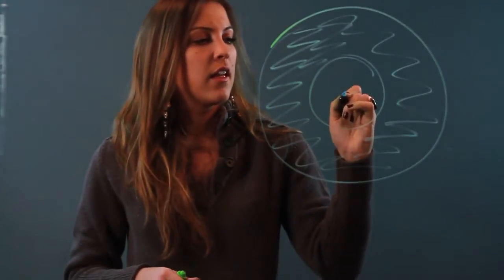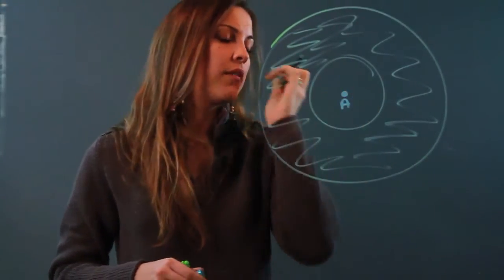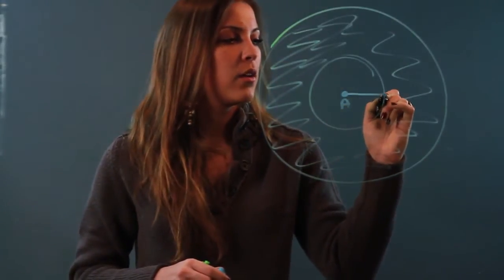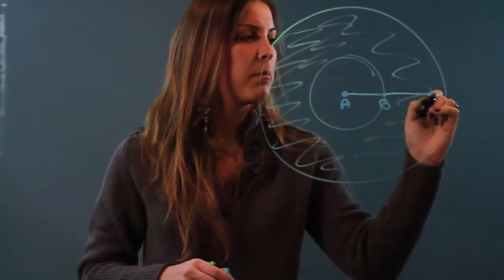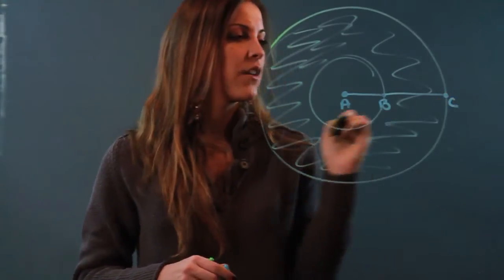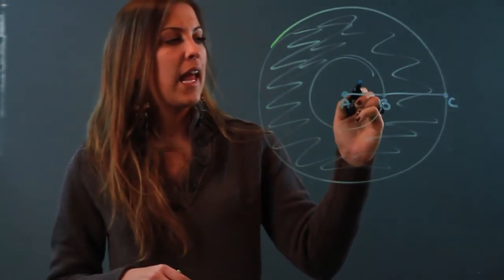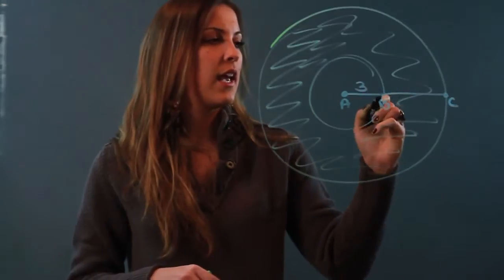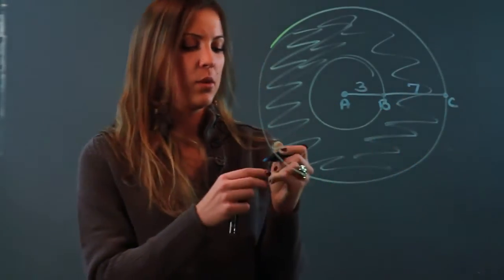And the information that we're given is, let's say A is the center point of this circle. And we'll say there's point B and there's an extension of a point C. And we'll say that AB is 3 units and BC is 7 units.